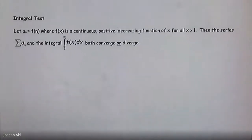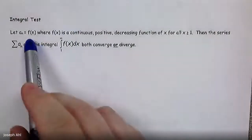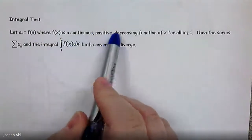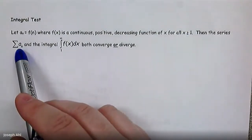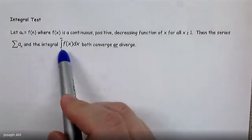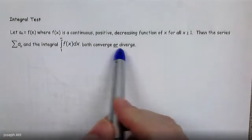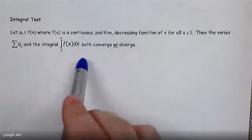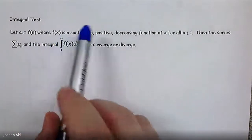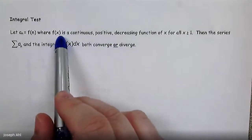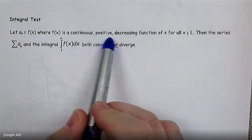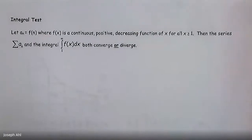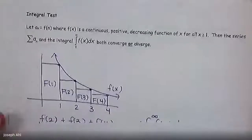Now let's talk about the integral test. It states: let a sub n equal some function f(n), where f(x) is a continuous, positive, and decreasing function for all x ≥ 1. Then the series — the sum of terms a sub n — and the integral from 1 to infinity of f(x) dx will either both converge or both diverge. There are conditions to check: f(x) must be continuous, positive, and decreasing for x ≥ 1.